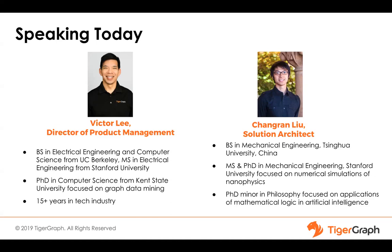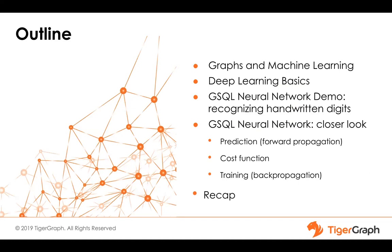The outline for our talk today: I'm going to give some background on why graphs and machine learning is a useful and powerful combination, touch on some very basic things about what deep learning is. Then I'll turn it over to Chung Run, where he's going to explain his use case, do a demo, and walk through in detail how we implemented it using the GSQL language. We actually implemented the neural network within TigerGraph, using the graph as the neural network and implementing the computations of the neural network.